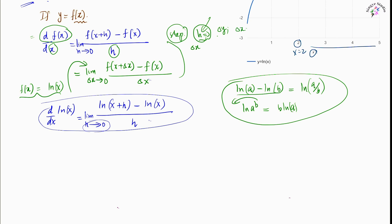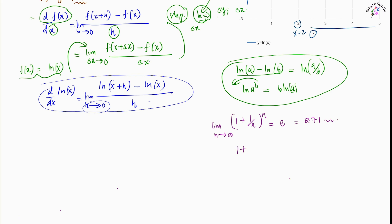We also need to recollect some important limit results involving e. If we have the expression (1 + 1/n) raised to n, as n tends to infinity, this limit equals e — a transcendental number with value approximately 2.71. Similarly, (1 + m) raised to 1/m as m approaches 0 also equals e, which is Euler's number, an irrational number with value 2.71...